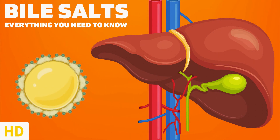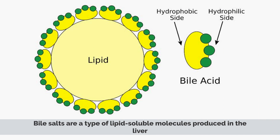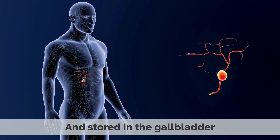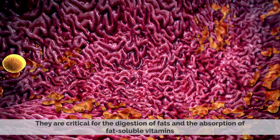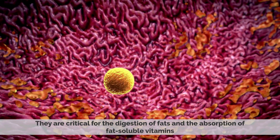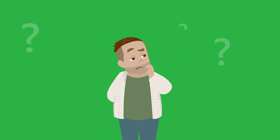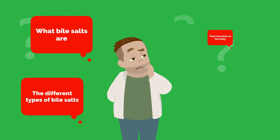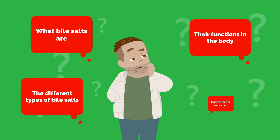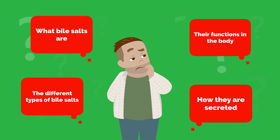Today's video topic is bile salts. Bile salts are a type of lipid-soluble molecules produced in the liver and stored in the gallbladder. They are critical for the digestion of fats and the absorption of fat-soluble vitamins. In this video, we'll explain what bile salts are, the different types of bile salts, their functions in the body, and how they are secreted.